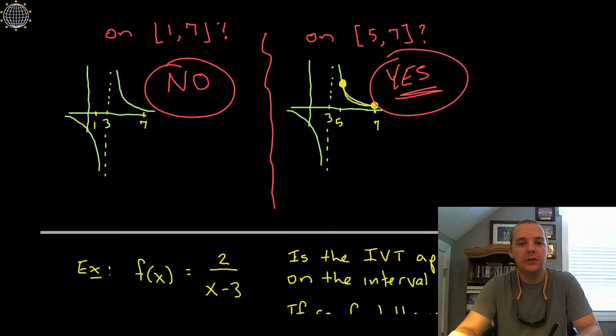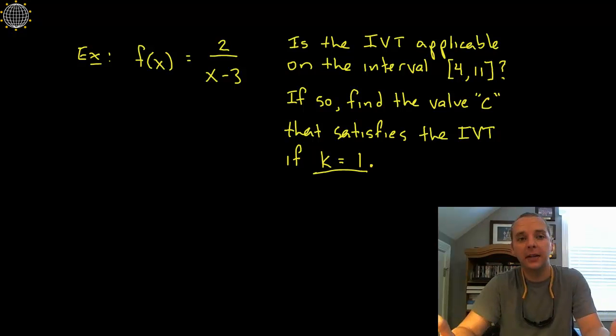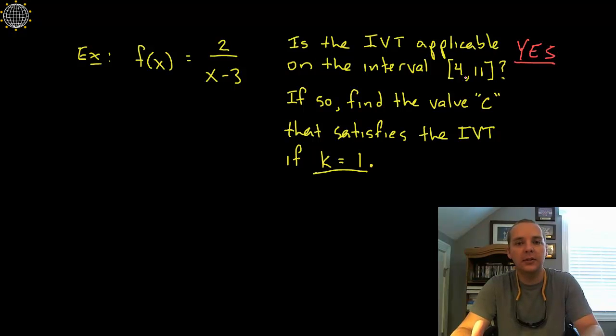Okay, so there's just a couple of comments there. Now let's look at a specific example. We'll keep the same function f(x) equals 2 over x minus 3. Then is the intermediate value theorem applicable on the closed interval from 4 to 11? And that answer is yes, it is, because the asymptote at 3 is not in the interval we're looking at. It's continuous on the interval from 4 to 11.